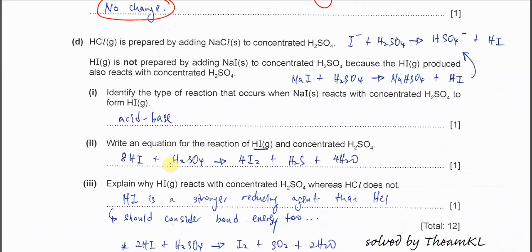Part D. HCl is prepared by adding NaCl with concentrated H2SO4. But HI is not prepared by adding sodium iodide to concentrated H2SO4 because the HI produced also reacts with the H2SO4. Actually, this statement is already giving you some hints. You just need to understand and answer accordingly. Part 1 - identify the type of reaction that occurs when sodium iodide reacts with H2SO4.